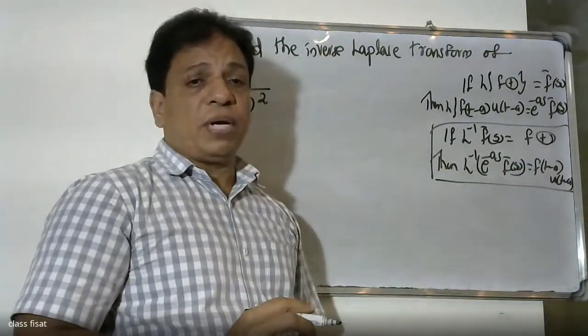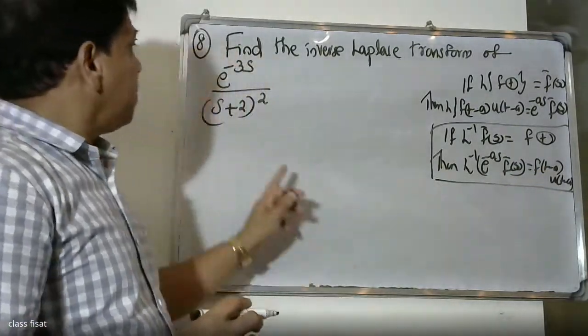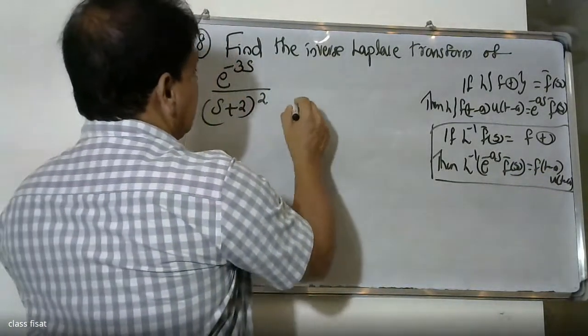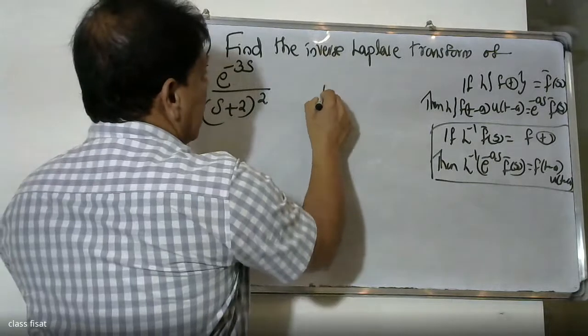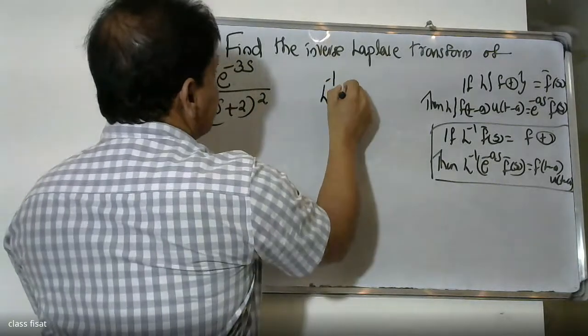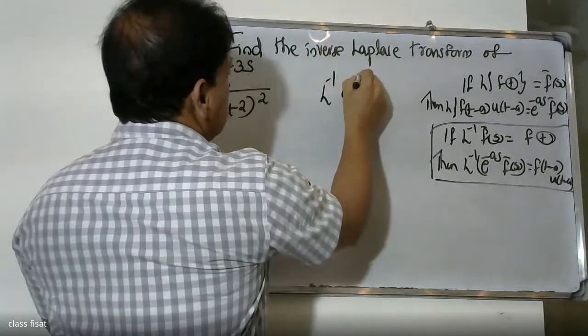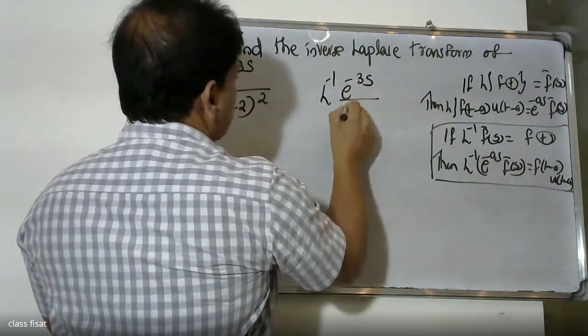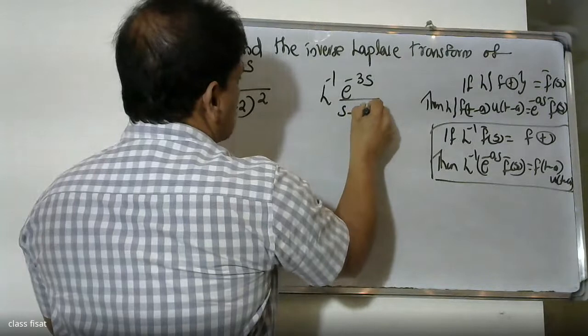Now we compare. L inverse of e raised to minus 3s by (s plus 2) squared. Comparing with the formula, we identify a equals 3, and F̄(s) equals 1 by (s plus 2) squared.